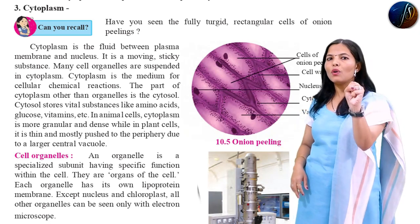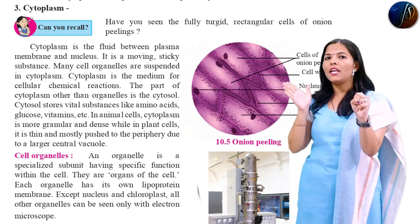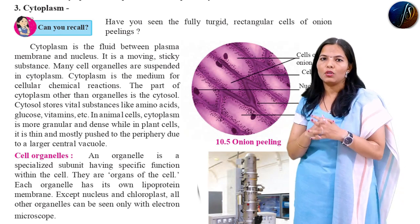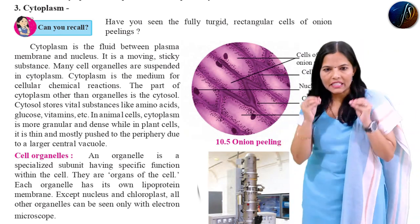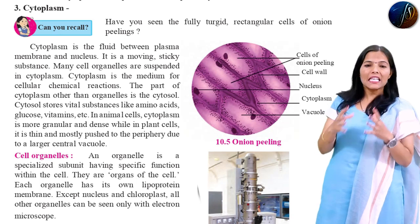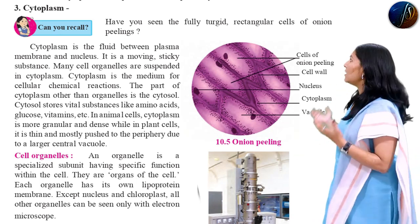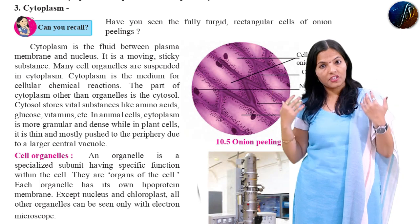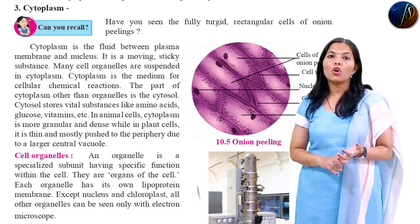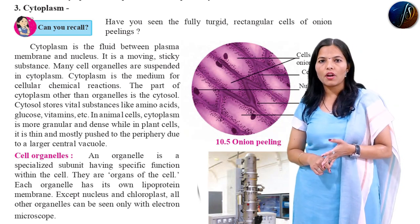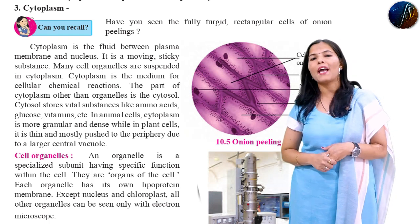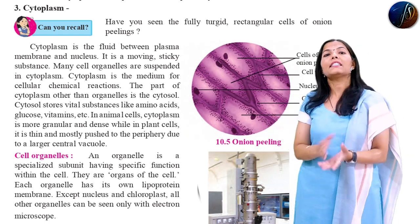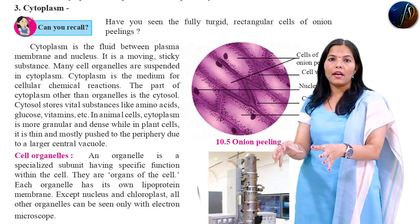Cytoplasm is a moving, sticky substance. Many cell organelles are suspended in the cytoplasm. All cell organelles are available there: your Golgi complex, mitochondria, endoplasmic reticulum, lysosome, and nucleus. All cell organelles are embedded and present in the cytoplasm.